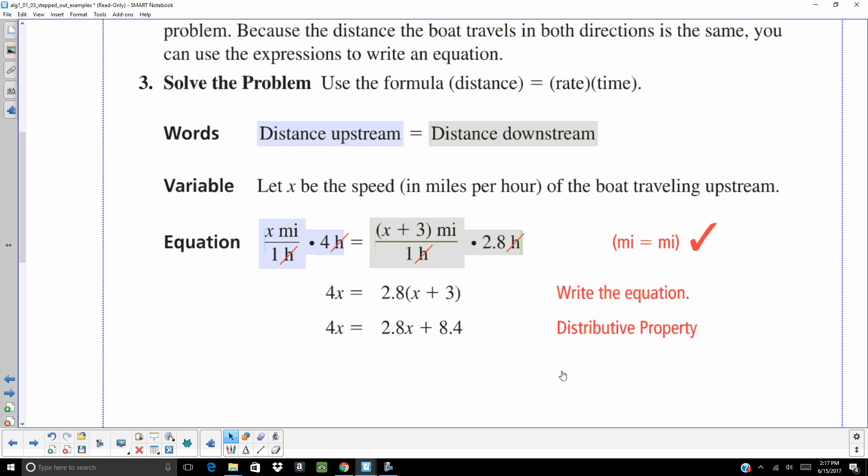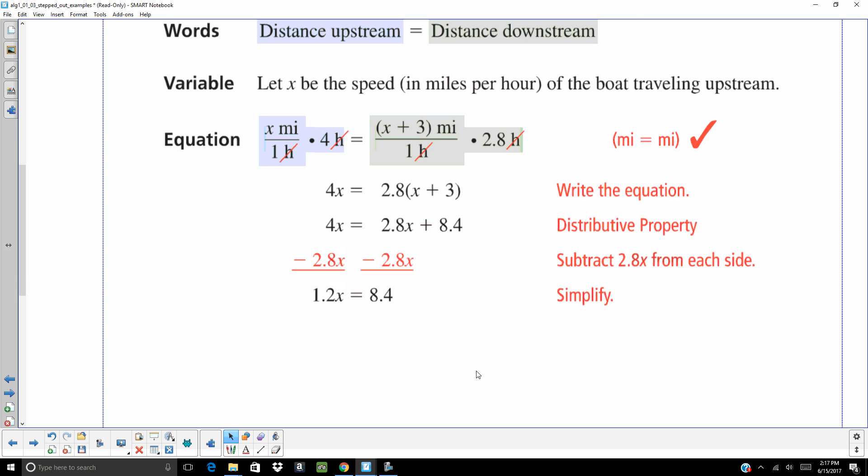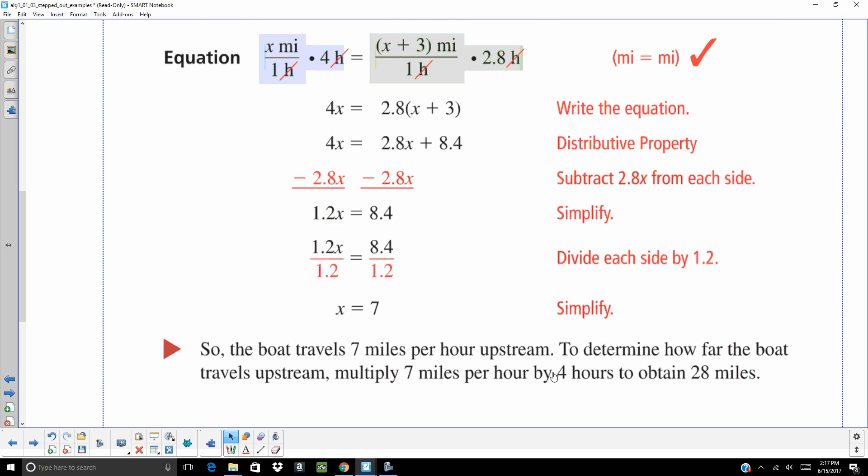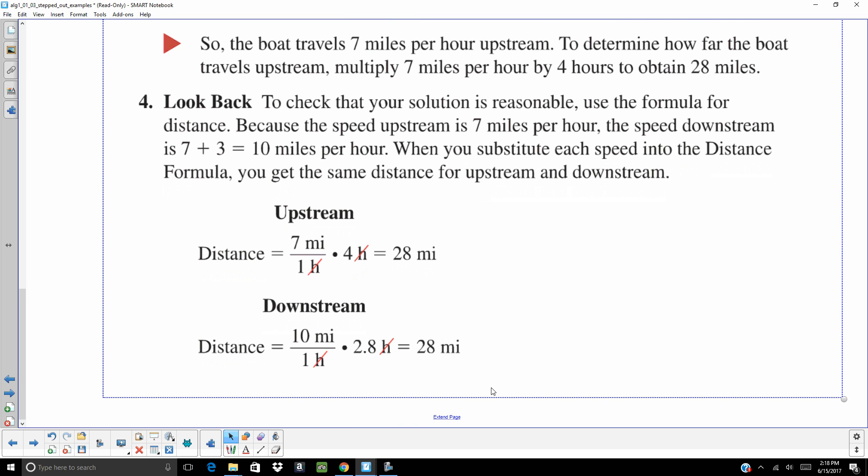Distribute. Subtract 2.8x, and you're going to get 1.2 equals 8.4x. So, the boat travels 7 miles per hour upstream to determine how far the boat travels. Multiply 7 miles times 4, and you're going to get 28 miles. Want to look back and make sure that that seems reasonable. 7 plus 3 equals 10. When you substitute that into the distance formula, you get the same distance for upstream and downstream.